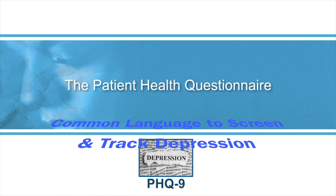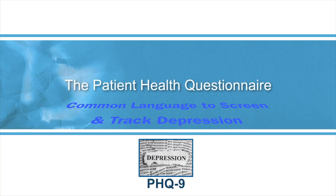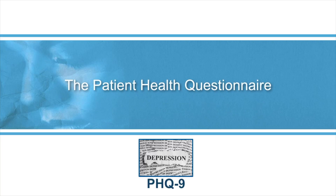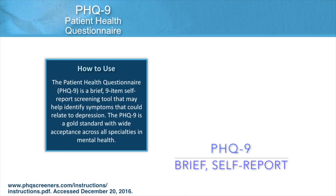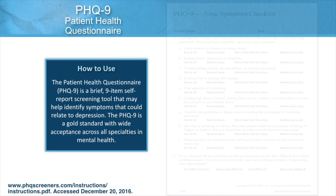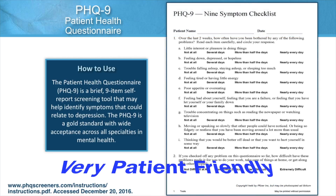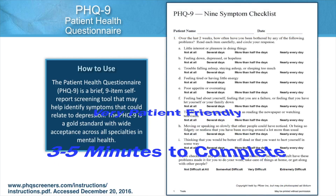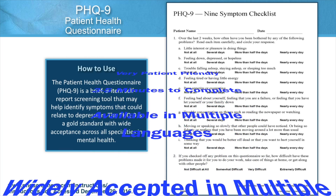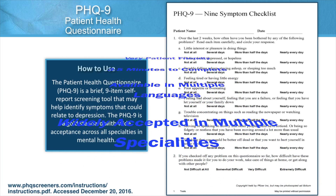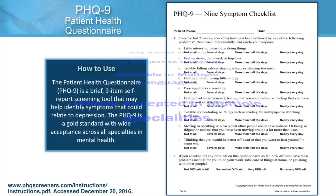Now, if you're using another depression scale or screener, there's no need to change, but you may want to give the PHQ-9 a try and see what you think. The PHQ-9 is a brief, nine-question self-report tool. It's very patient-friendly. It only takes about three to five minutes to complete. It's available in many languages, and it's widely accepted across all specialties in mental health.